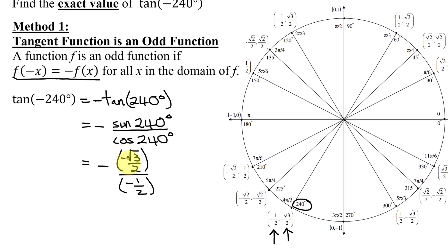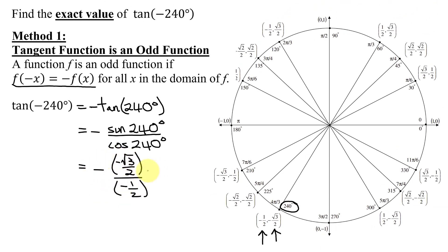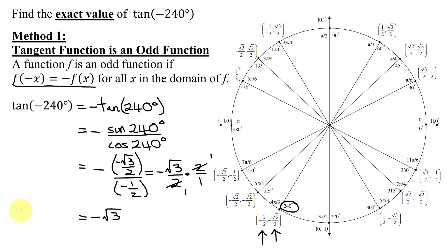I have three negatives multiplied and divided in this expression, so my answer is going to be negative. To divide the fractions, take the fraction in the numerator — the square root of 3 divided by 2 — leave it alone, and multiply it by the reciprocal of the fraction in the denominator. The reciprocal of one half is 2 over 1. Reducing the two 2's, I get negative the square root of 3 times 1 divided by 1 times 1, which is just negative the square root of 3. So the tangent of negative 240 degrees is negative the square root of 3.